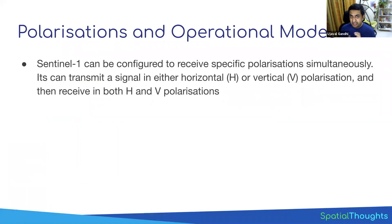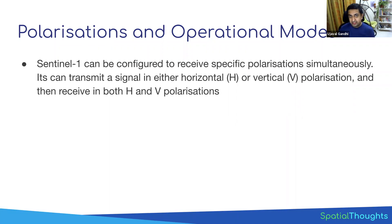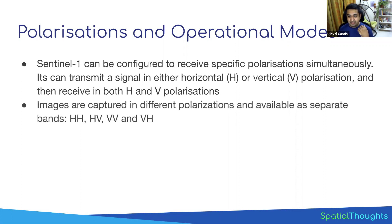The satellite can be configured to operate in different modes. The pulses sent can be in different polarizations — the waves can be in a vertical or horizontal plane, called the plane of polarization. It can send waves in horizontal (H) or vertical (V) planes and receive in either H or V configuration, giving four different configurations that help detect different things.